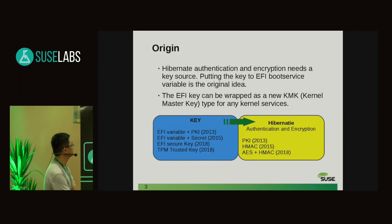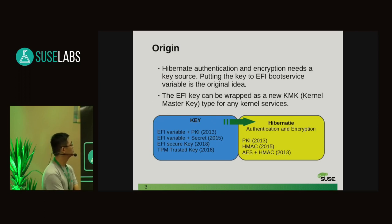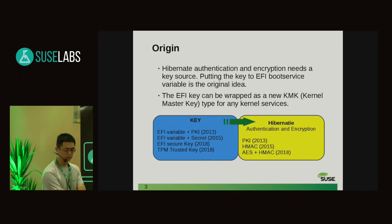The third version is now, this year. I separated the EFI security key from the hibernation authentication and encryption functions, because I found that if I tried to push two new functions into two different subsystems — one related to the key retention service and one to the power management subsystem — it's hard to succeed. So I tried to separate them. I also think the EFI key can be wrapped as a new kernel master key type for other kernel services, not just hibernate.